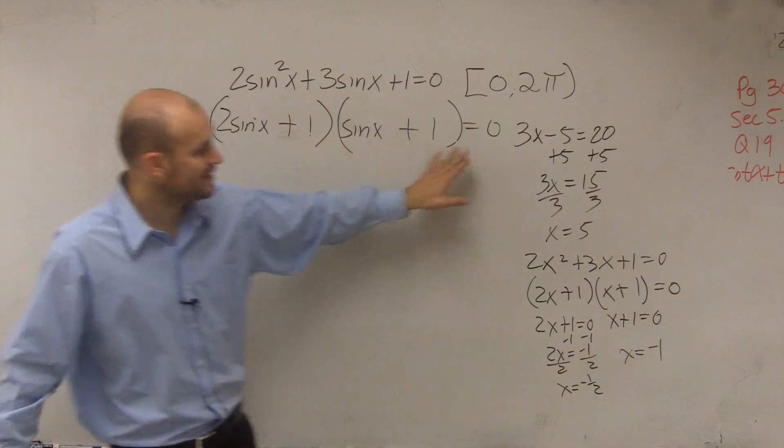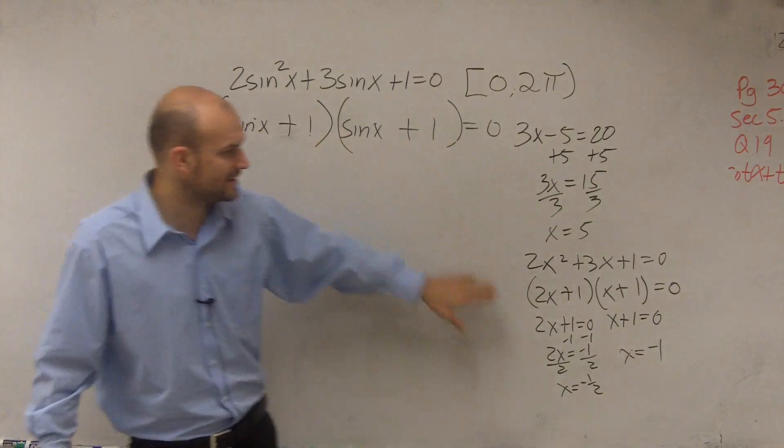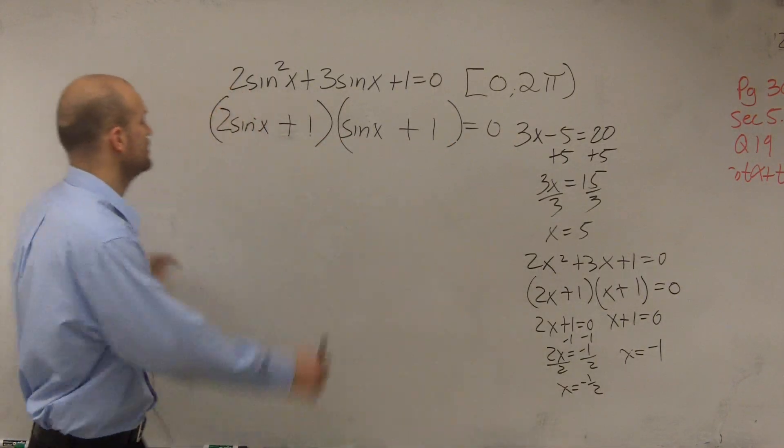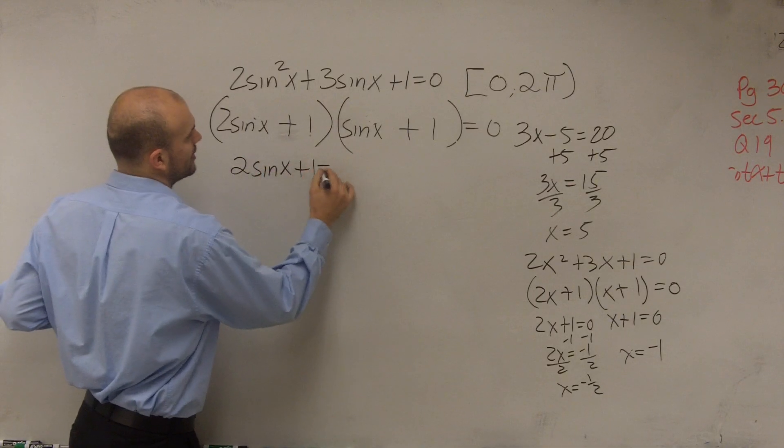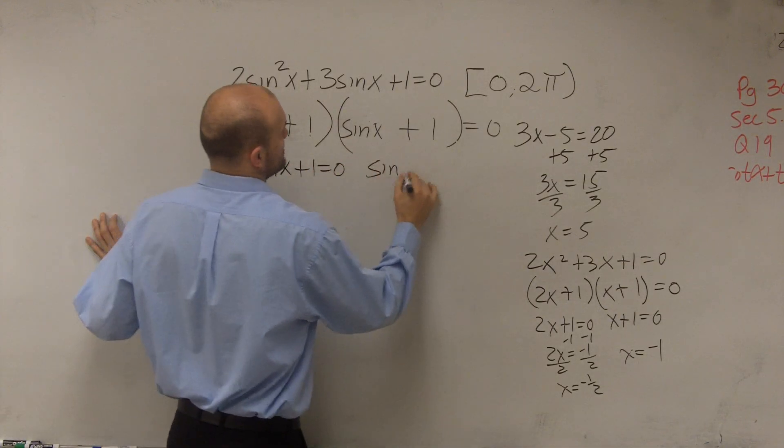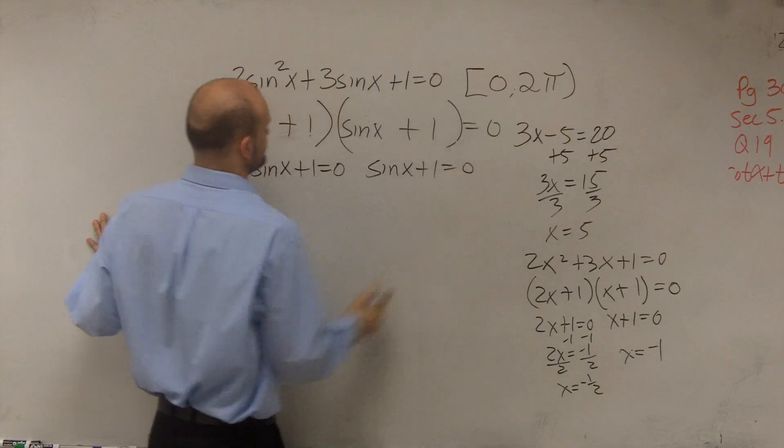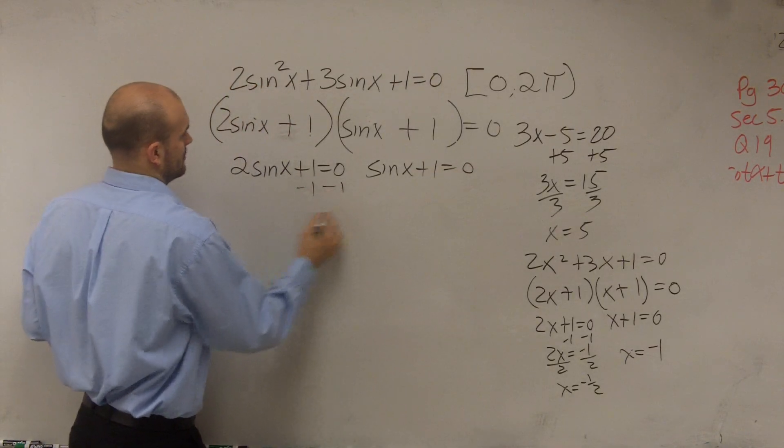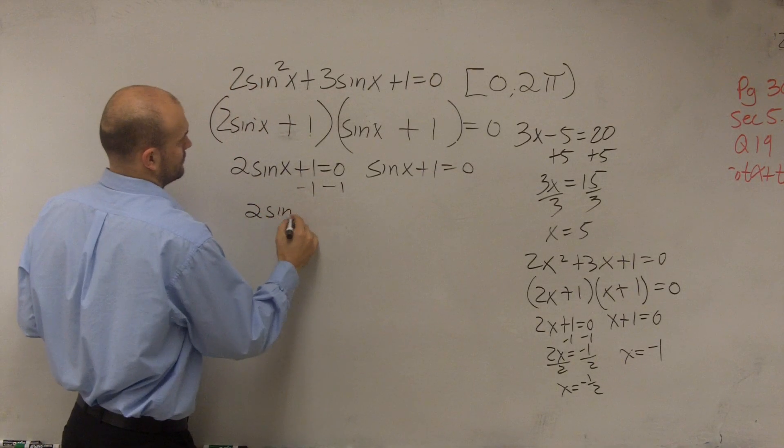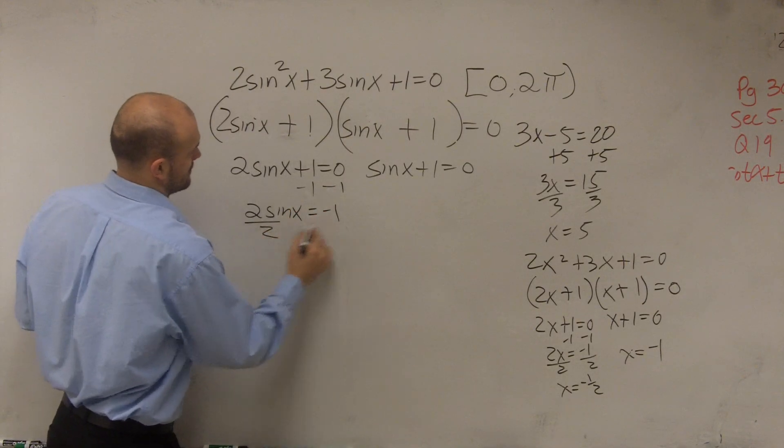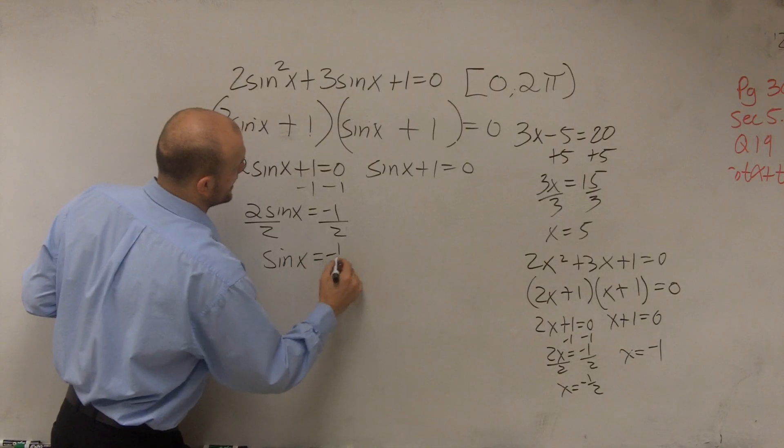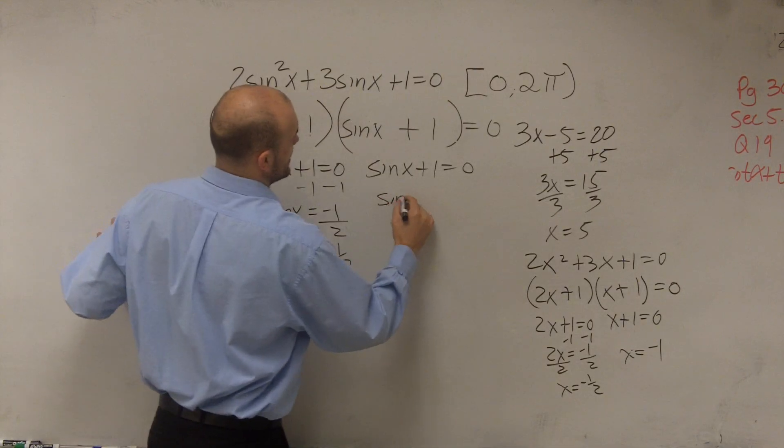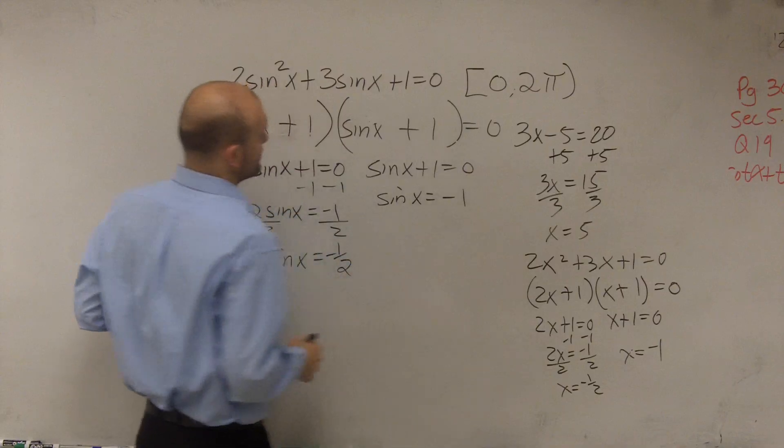So now, we can apply the zero product property once we have it factored. So therefore, you can say 2 sine of x plus 1 equals 0, and sine of x plus 1 equals 0. So now you could say sine of x equals negative 1 half, and you could say sine of x equals negative 1.